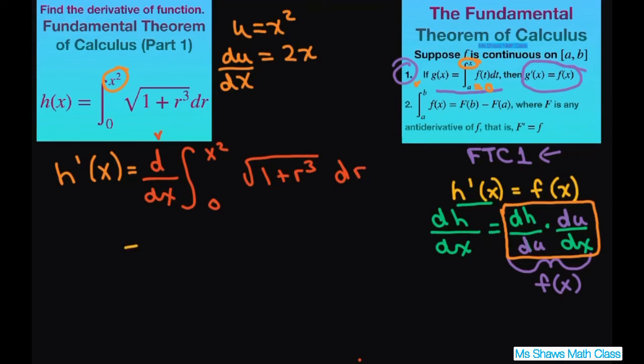Now this is going to equal, remember this is derivative of H with respect to X. We want it to equal derivative of H with respect to U. So this is with respect to U. You take the derivative, just copy everything down, but we substituted X squared with U. And just copy down your square root of 1 plus R cubed, DR. So that's this part.